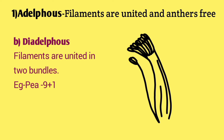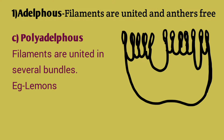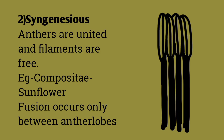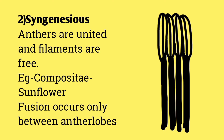In diadelphous, filaments are united in two bundles. Example is pea, where stamens are in a nine plus one condition. In polyadelphous, filaments are united in several bundles. Example is lemon.